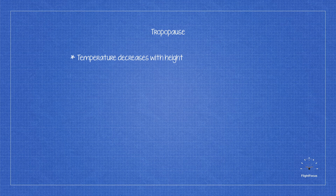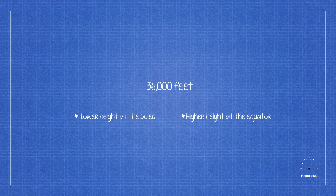Past the boundary, the temperature drops. It can be as low as minus 50 degrees Celsius at the poles and plummet to minus 80 degrees Celsius at the equator. Its average height is around 36,000 feet with variances at the pole and equator.